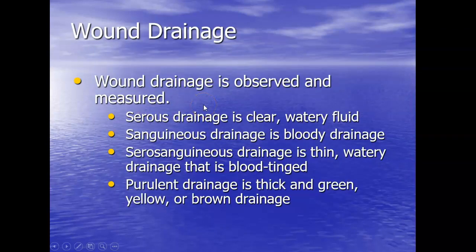I want you to learn the terms for wound drainage. Serous drainage is clear, watery fluid — it may look pale yellow but is watery in texture. Sanguinous is thick and bloody drainage. Serosanguinous is thin, watery drainage that is blood-tinged. And purulent is the term for pus — thick, green, yellow, or brown drainage. That would be purulent drainage.